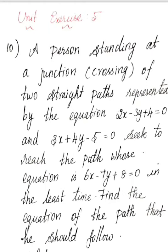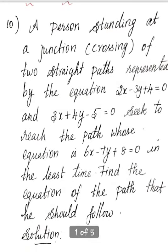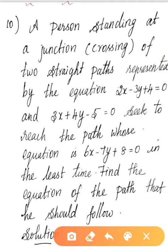Exercise 5, Question number 10. A person standing at a junction of two straight paths represented by the equations 2x minus 3y plus 4 equal to 0 and 3x plus 4y minus 5 equal to 0 seeks to reach the path whose equation is 6x minus 7y plus 8 equal to 0 in the least time. Find the equation of the path that he should follow.